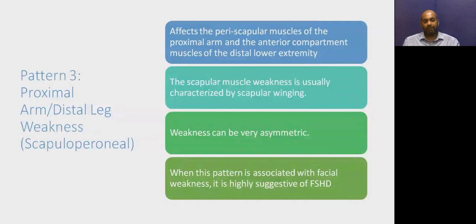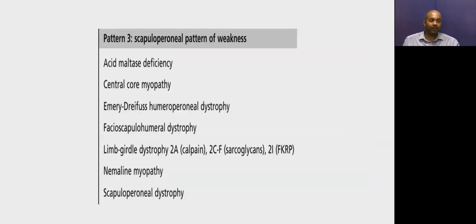The third pattern is the scapuloperoneal pattern — proximal arm and distal leg weakness. This pattern affects the periscapular muscles of the proximal arm and the anterior compartment muscles of the distal lower leg. Scapular muscle involvement presents as scapular winging and can be very asymmetric. When this pattern is combined with facial weakness, it is suggestive of facioscapulohumeral dystrophy. Other disorders in this pattern include acid Pompe disease and calpainopathy.